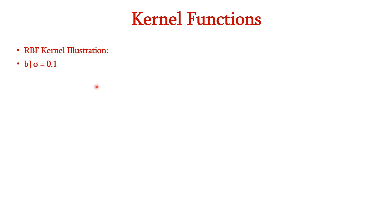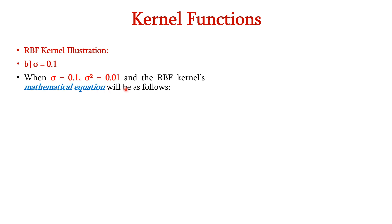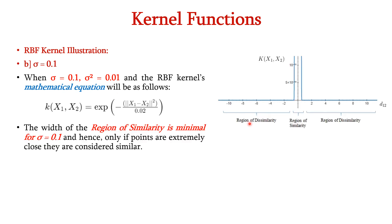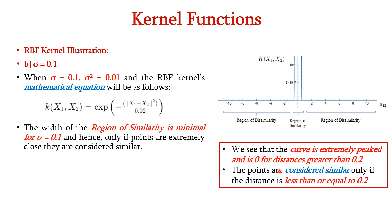Next, let us assume sigma is equal to 0.1. When sigma is 0.1, sigma square becomes 0.01 and the denominator in the RBF kernel equation becomes 2 into 0.01 equals 0.02. The width of the region of similarity is minimal for sigma equal to 0.1. Hence, only points that are extremely close are considered similar. From the curve, we can see a sharp peak and the kernel value is approximately 0 for distances greater than 0.2. So points are considered similar only if the distance is less than or equal to 0.2.